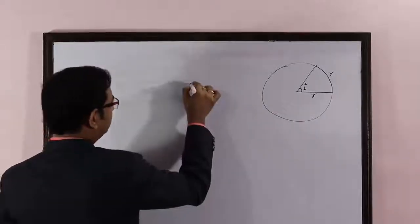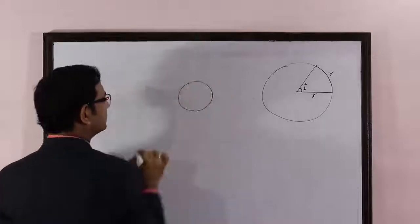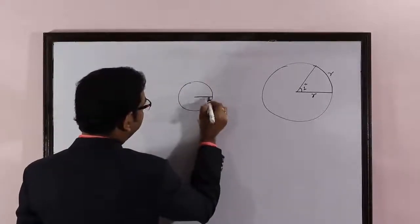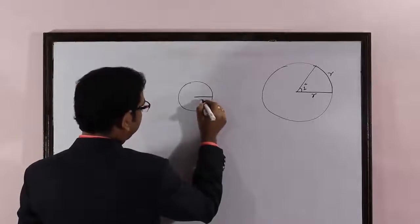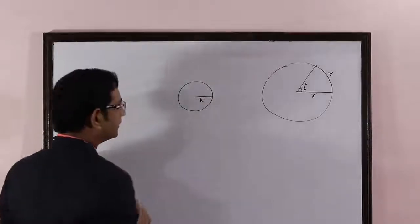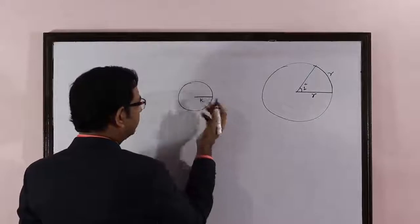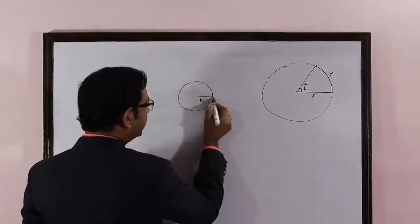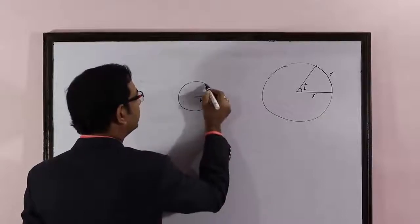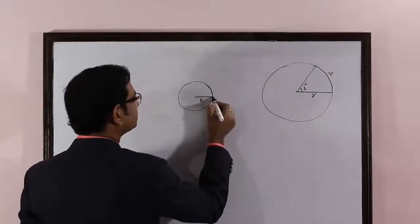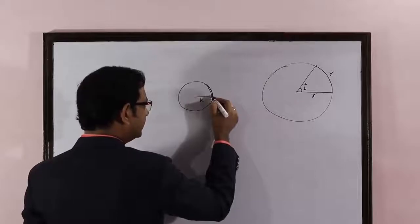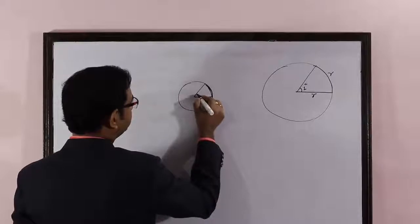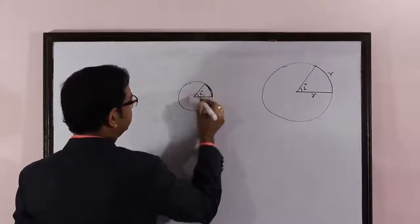One more time. Draw a circle of any radius — let's make a small circle. Now, with an arc of length equal to the radius, you can draw an arc on the circle. The angle subtended by this arc at the center of the circle is actually one radian.